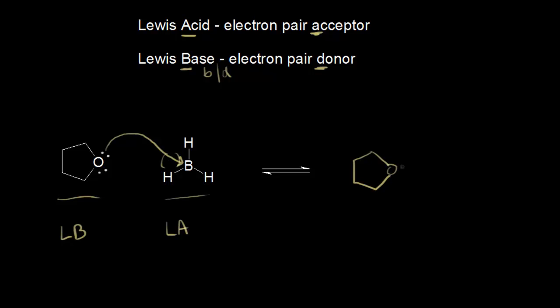Drawing the product: oxygen is now bonded to boron, and boron is still bonded to its three hydrogens. The magenta electrons formed the new O–B bond. The red electrons that were on oxygen remain on oxygen, giving it a +1 formal charge. Boron receives a −1 formal charge.